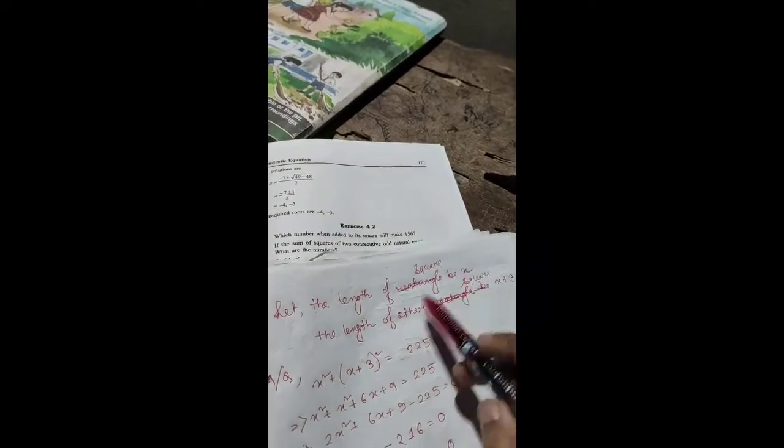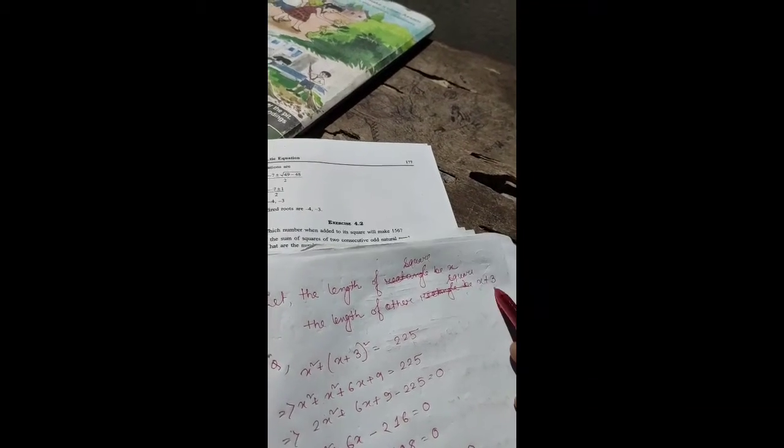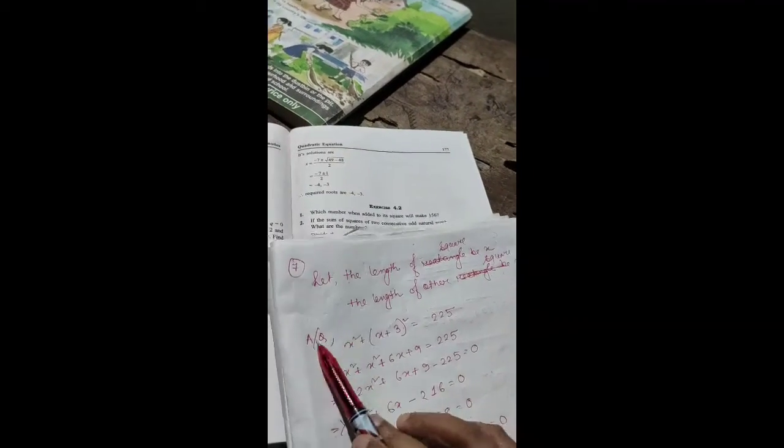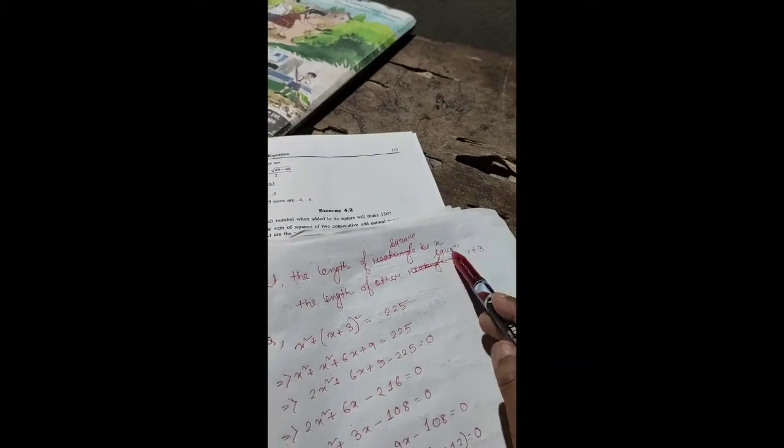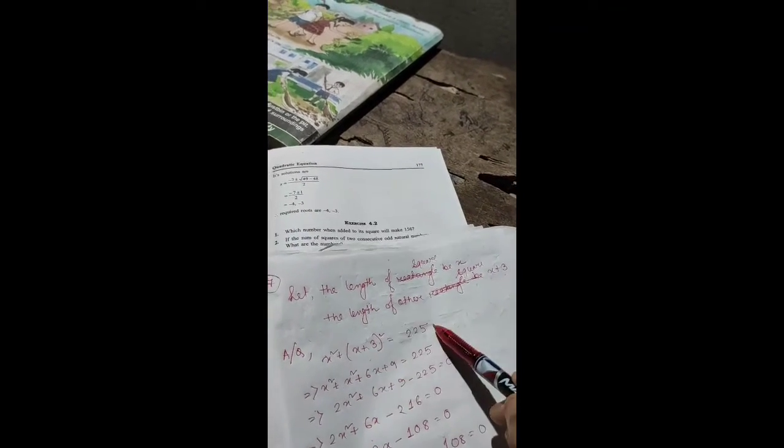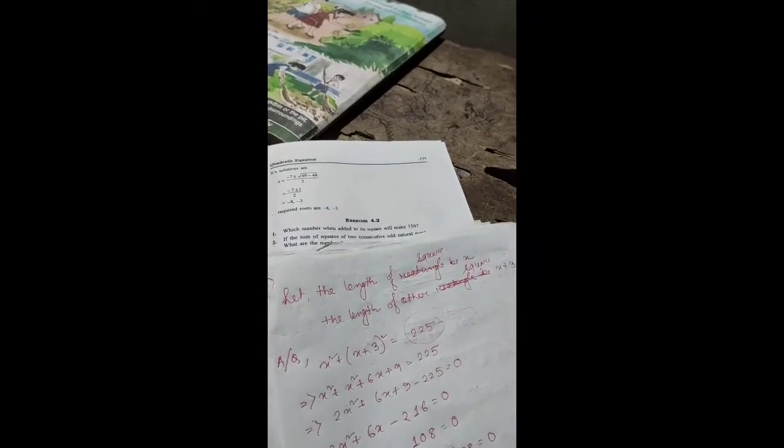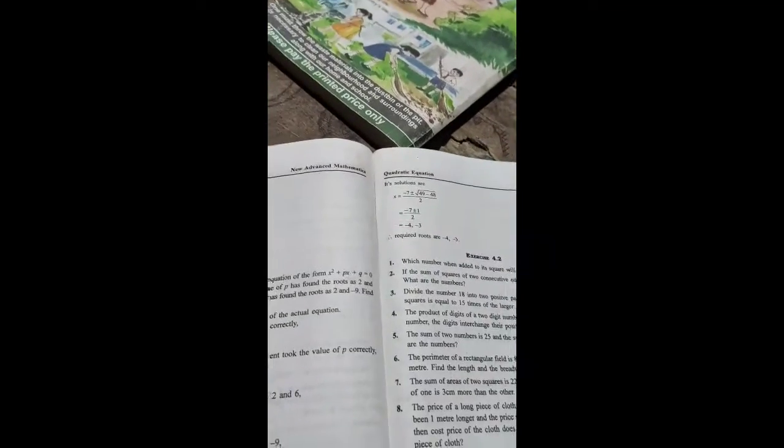So suppose length is x, next is x plus three. The area of a square is side squared, so x² plus the area (x+3)² equals 225 square centimeters.